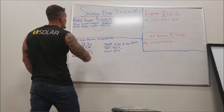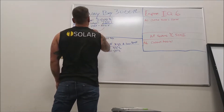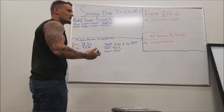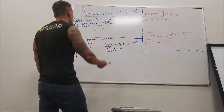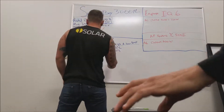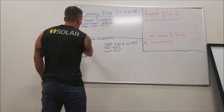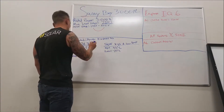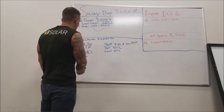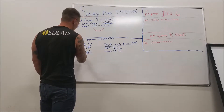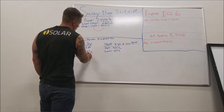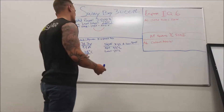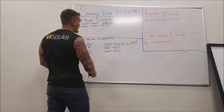What we're worried about with our string sizing is our maximum voltage. If we go over that, the inverter is going to explode. So we're going to look at our module's VOC — the voltage at open circuit — which is 38.7 volts. That's assuming we're at 25 degrees Celsius, which in reality we're not — that's standard testing conditions. So we need to correct that.